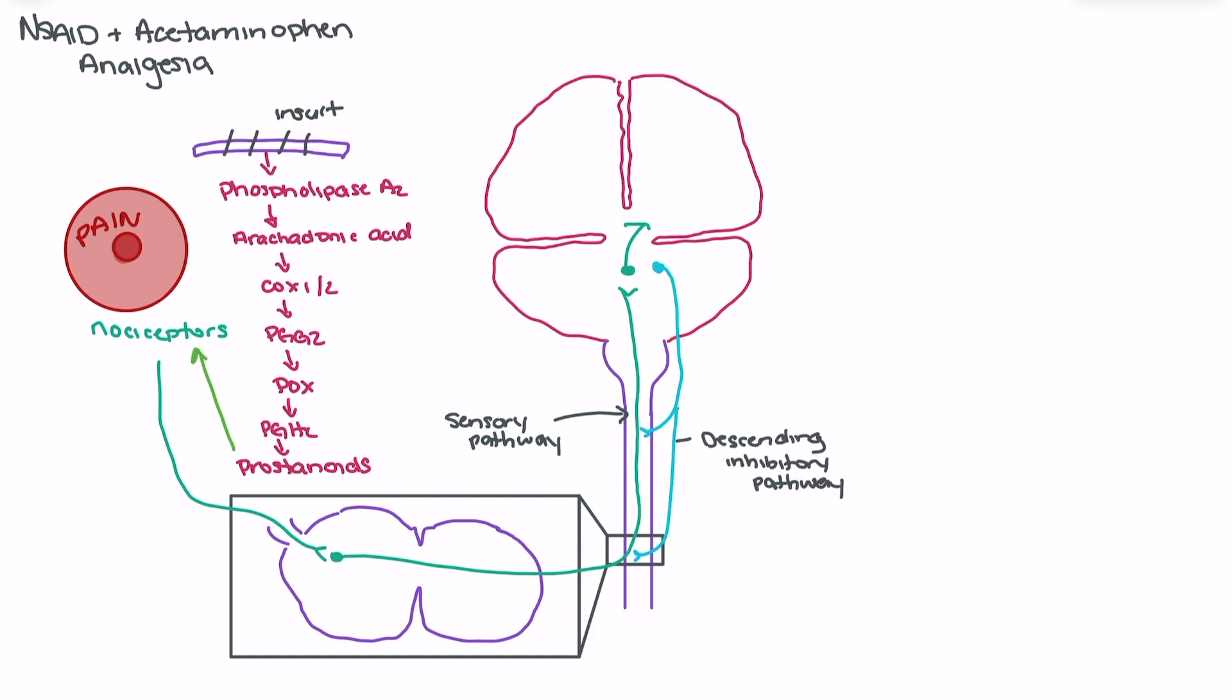So when we're giving something like an NSAID, the NSAID works to block the COX-2 pathway. NSAIDs act here to block the COX-2 pathway, which reduces the ability to flow through this flowchart, create the prostanoids, and stimulate the nociceptors. So we'll see a reduction in pain.